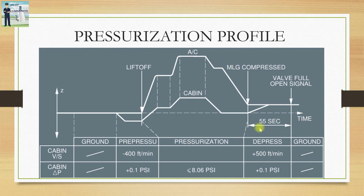Coming to the pressurization profile, which is essentially a plot of altitude (z-axis) against time. There are two types of profile: the first indicates the aircraft altitude and the second indicates the cabin altitude. Since altitude is essentially a measure of pressure, as we increase the pressure inside the cabin, we are essentially decreasing the altitude as felt by the occupants. The aircraft's actual altitude will be much higher compared to the altitude felt inside.